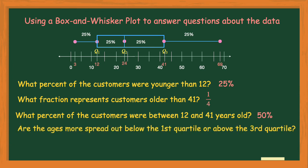Another question: are the ages more spread out below the first quartile or above the third quartile? You're basically comparing the two whiskers. The first whisker goes from quartile one down to the minimum of three, while the other goes from quartile three at 41 up to 69. That upper whisker is longer, so the data is more spread out above the third quartile.